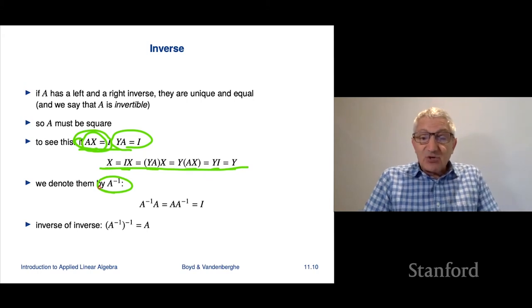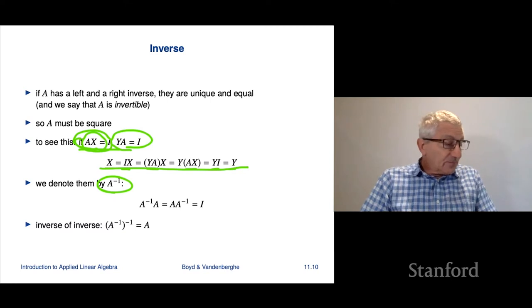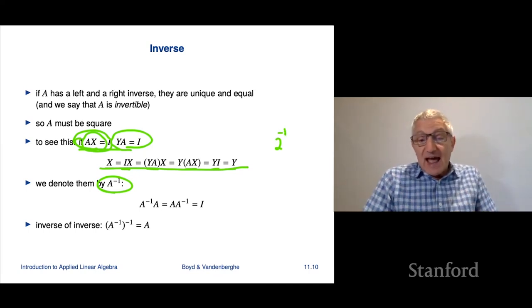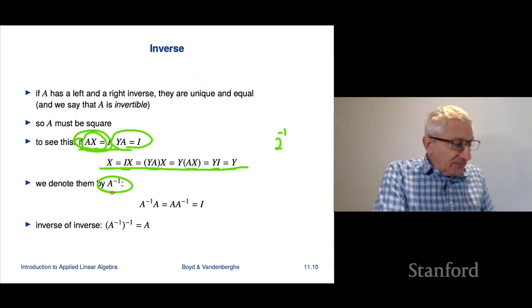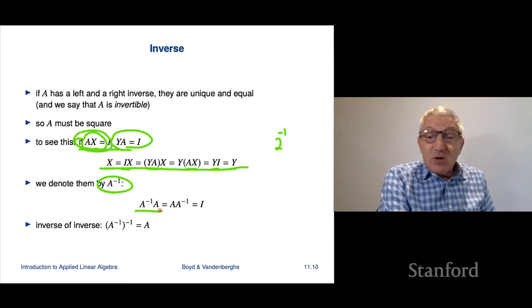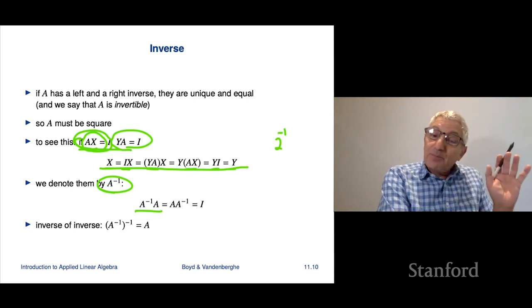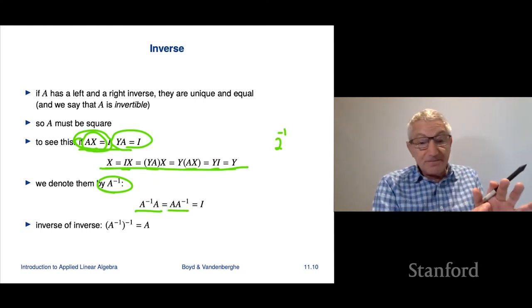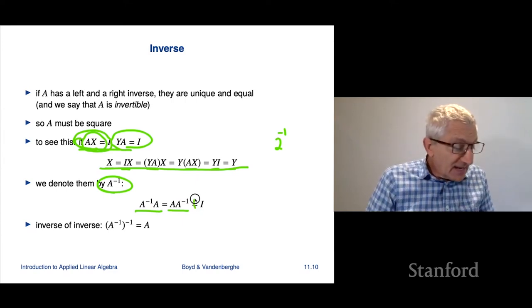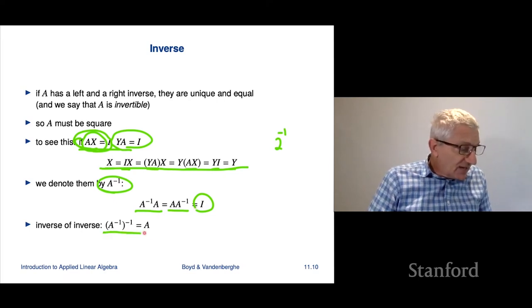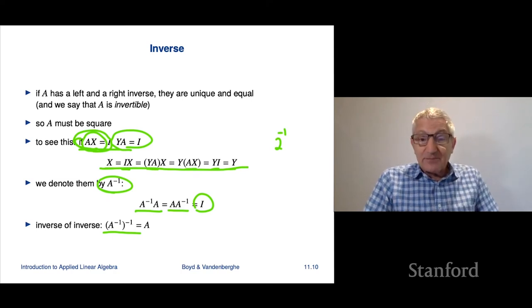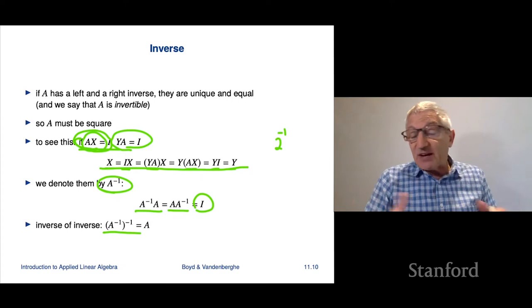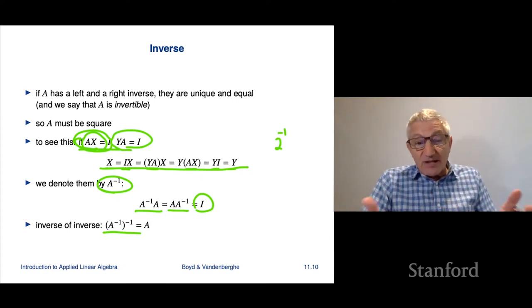The unique inverse is denoted A-inverse or A to the minus 1 power — very similar to how we work with numbers. When the inverse exists, you can multiply on the left or right and get the identity either way: A times A-inverse equals I and A-inverse times A equals I. You can also check that the inverse of the inverse is back to the matrix again — just like transposing twice. And it's sort of getting more comfortable, more like the situation with numbers.